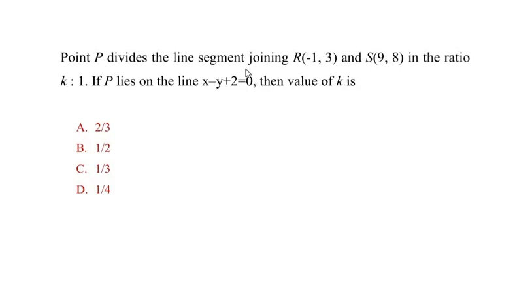Hello and welcome to my channel. In this video we are going to solve an example on coordinate geometry. Point P divides the line segment joining R(-1, 3) and S(9, 8) in the ratio k:1. If P lies on the line x - y + 2 = 0, then the value of k is...